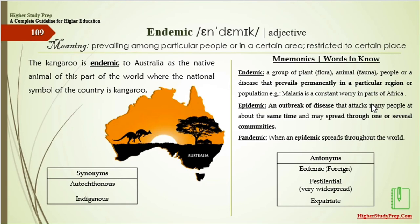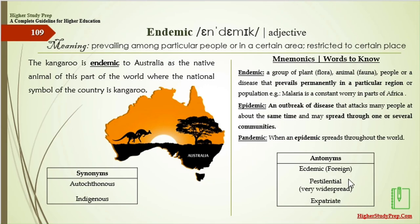Epidemic means an outbreak of disease that attacks many people at about the same time and may spread through one or several communities. When an epidemic spreads throughout the world, it is known as a pandemic. The antonyms of endemic are epidemic, pestilential, or expatriate.